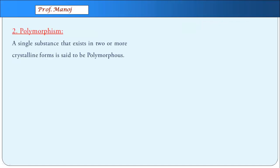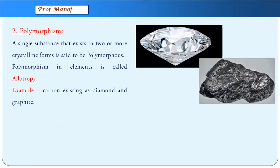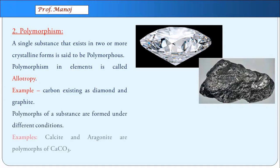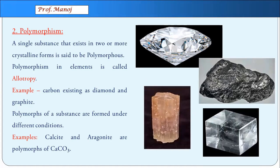Second is polymorphism — a single substance can exist in different crystalline forms. When polymorphism is seen in elements it is called allotropy. For example, carbon as diamond and carbon as graphite — both are carbon but have different crystal structures. Polymorphs can also be formed in compounds under different conditions. For example, calcium carbonate exists as two forms: calcite crystal and aragonite crystal. Calcite crystal was used to make Nicol prisms to create plane polarized light and discover optical activity. Both calcite and aragonite have the same chemical formula — CaCO₃ — but look completely different.